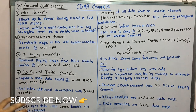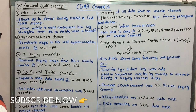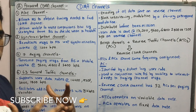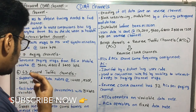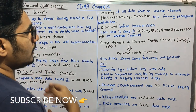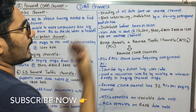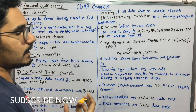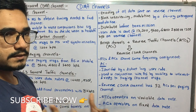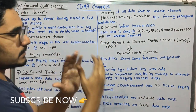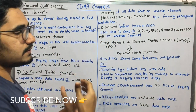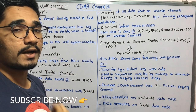Next we have the reverse CDMA channel. It groups user data into 20-millisecond frames on the reverse channel. After grouping, it performs encoding of all data sent on the reverse channel, then does block interleaving — separating the data based on certain parameters.